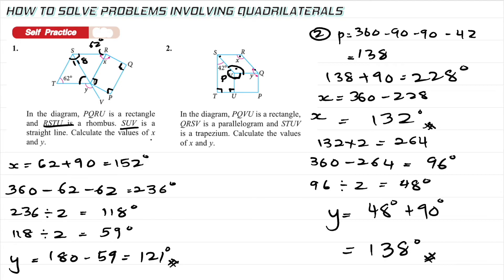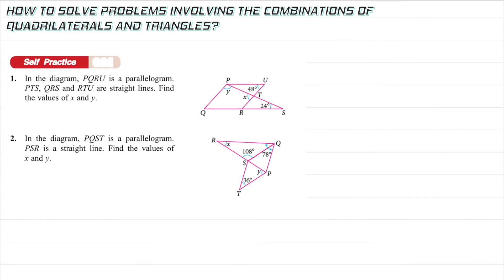How do we solve problems combining triangles and quadrilaterals? Just remember: quadrilateral interior angles sum to 360, triangle interior angles sum to 180. PQRU is a parallelogram, so opposite angles are equal: if this angle is 48, the opposite is also 48.